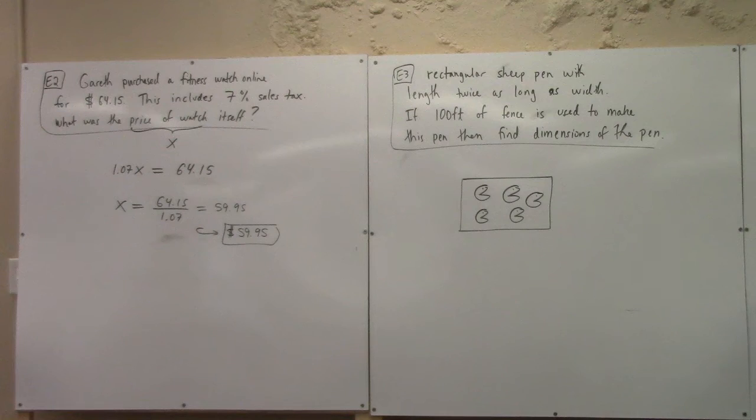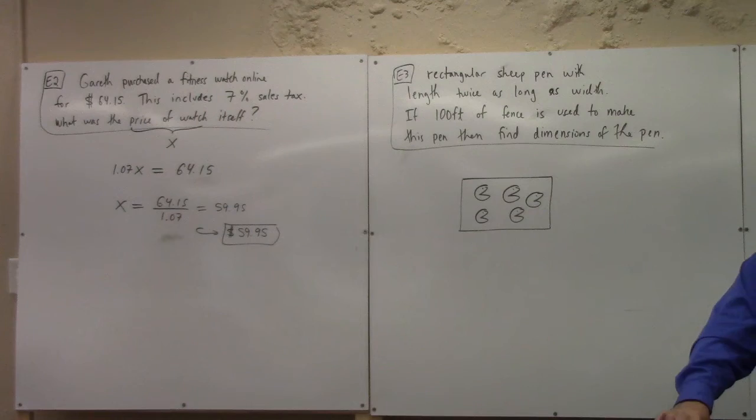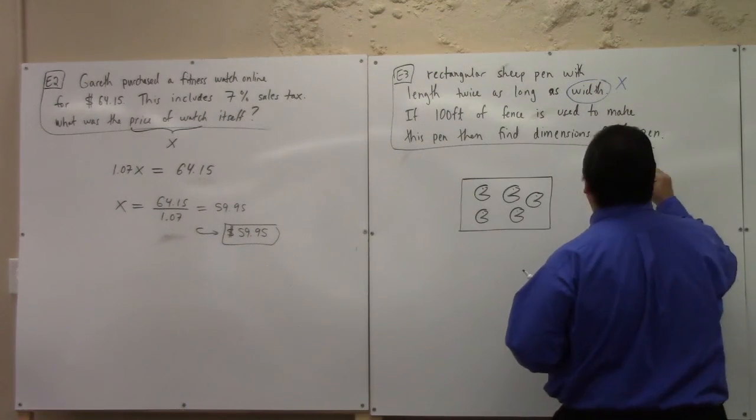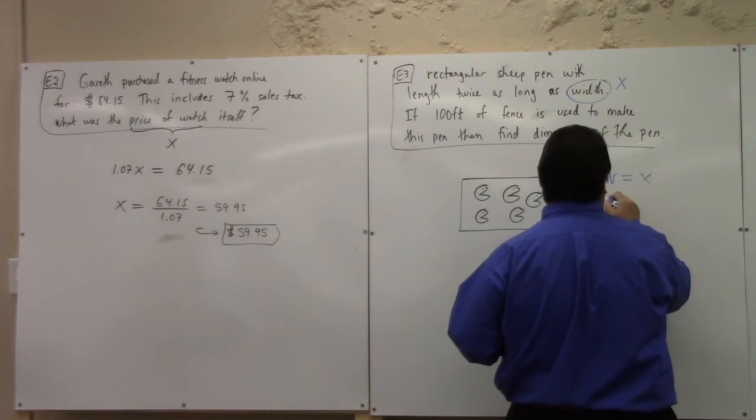Okay, so we need to come up with a variable, right? So you either got length or width. Which one do you want to make x? I'm going to go with width, and I'll show you why for a second here. If we call the width x, right?